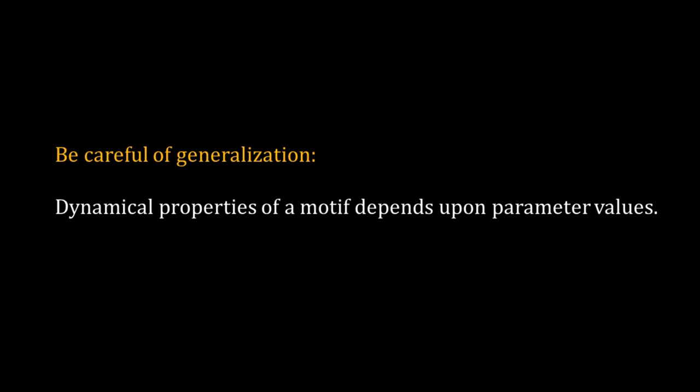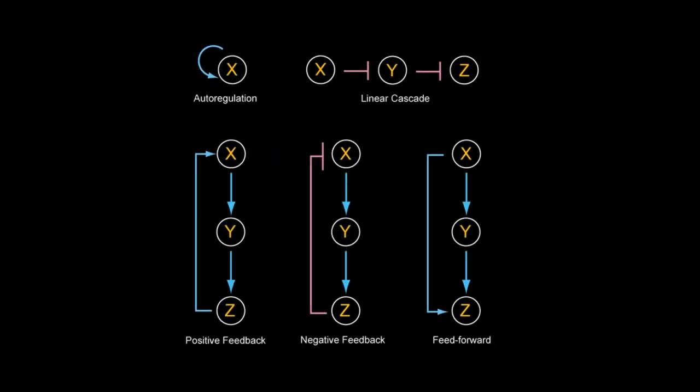For example, a negative feedback will trigger oscillation only for certain parameter values. For other parameter values it will lead to a steady state. So we have to be very careful about generalization. That's all for this video. Let's explore some network motifs.